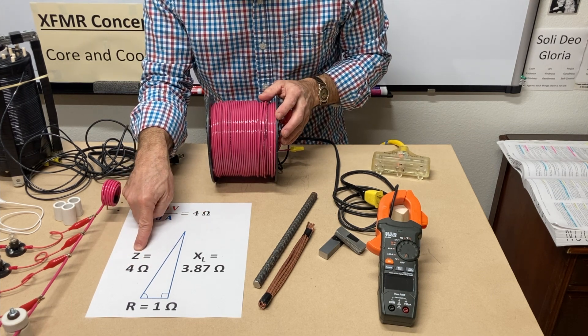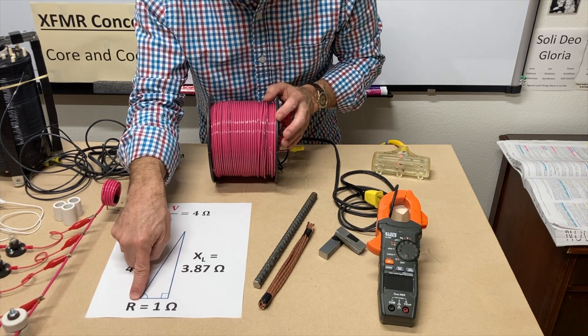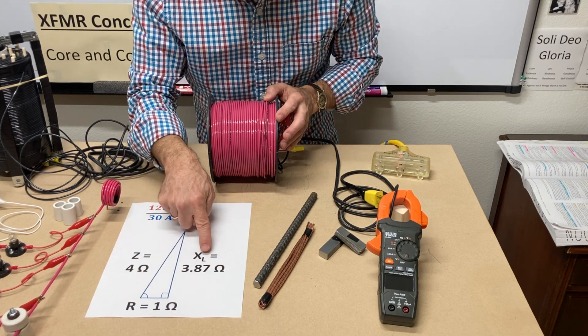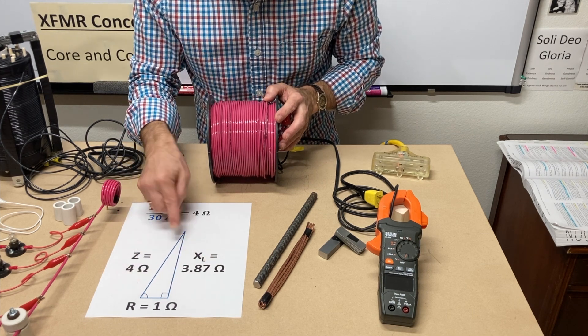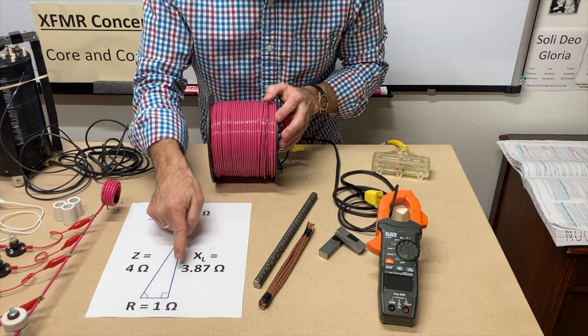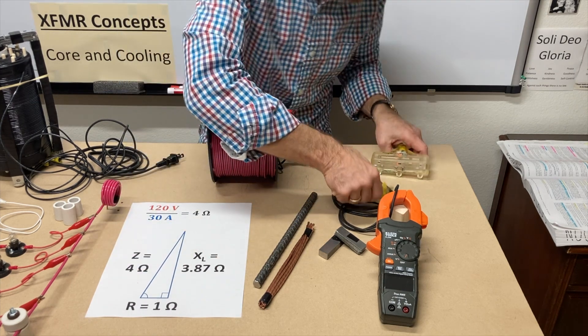We came up that there must be four ohms of total opposition, impedance if you will, that's made up of the ohms from resistance and the ohms from the inductive reactance, 90 degrees from each other. So I did Pythagoras backwards to figure out what this was.